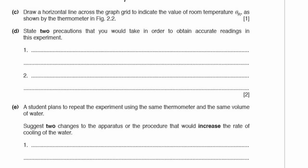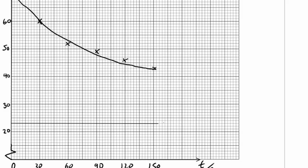Part C. Draw a horizontal line across the graph to indicate the value of room temperature as shown by the thermometer. Let's do that now. I'm going to label that room temperature, theta R, 23 degrees Celsius. No need to do it, but just to make sure I get the mark and they don't miss the line that I've drawn.